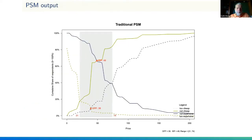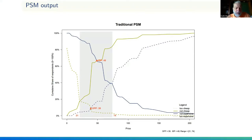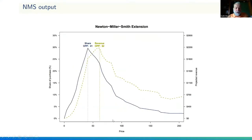The basic price sensitivity meter involves plotting cumulative curves and their inversions, looking at intersections with names like indifference price point, optimal price point, and point of marginal cheapness. In the end you get a qualitative interpretation — the ideal price is probably somewhere between the two exterior intersections. What Newton Miller Smith did was add purchase intention questions that allow us to look at Van Westendorp information volumetrically, to find where revenue is likely to be maximized. You can draw revenue maximization curves, which are much more credible.